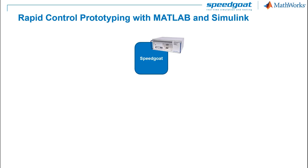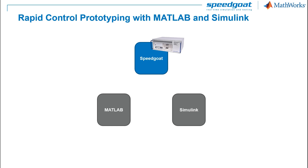On the other side, we have the Speedgoat real-time computer. On the software side, we have MATLAB and Simulink. For code generation, we use MATLAB Coder and Simulink Coder. We can see Simulink Real-Time as the gateway between the control prototyping hardware and MATLAB and Simulink.